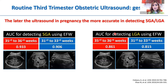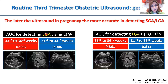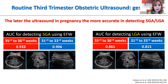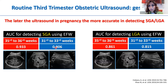Why is the later ultrasound more accurate for detecting small or large gestational age? Looking at this data using estimated fetal weight to detect small gestational age, the area under the curve — which represents predictive accuracy — is higher later in pregnancy at 35 to 37 weeks (0.93) compared to the earlier 31 to 34 weeks window (0.906). You see similar performance for large gestational age: again, the 35 to 37 weeks window has better predictive accuracy using estimated fetal weight.